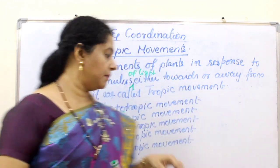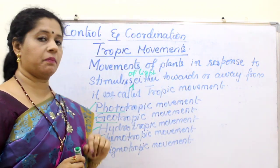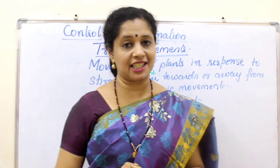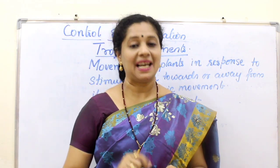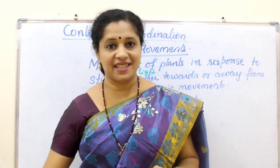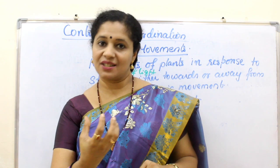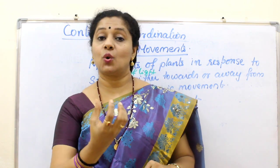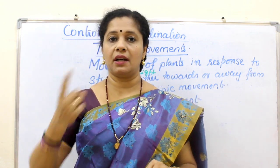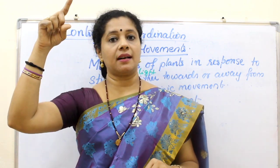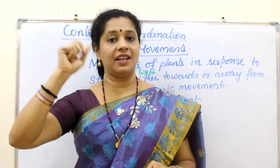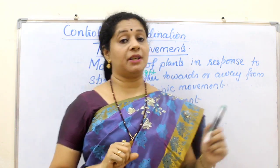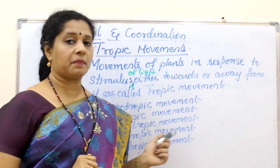Now let us look at geotropism. Roots grow towards the earth — that means towards the gravitational force — so roots are positively geotropic. Shoots grow away from gravity, so shoots are negatively geotropic.